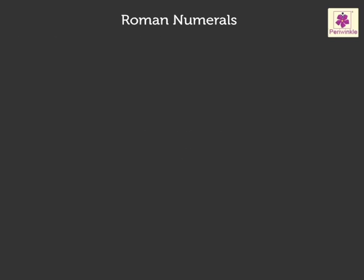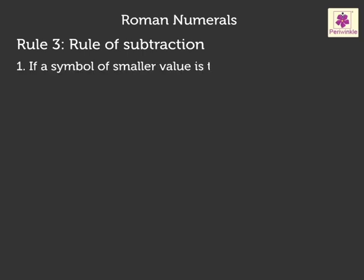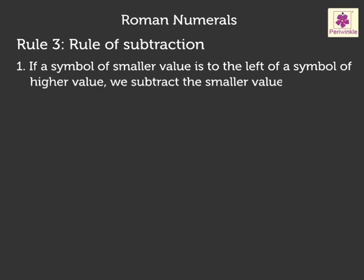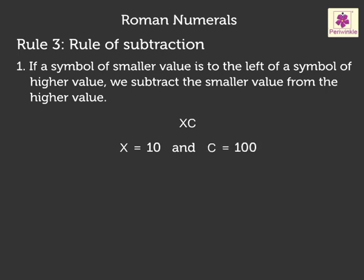Finally, we have the third rule — Rule 3: Rule of Subtraction. If a symbol of smaller value is to the left of a symbol of higher value, we subtract the smaller value from the higher value. For example, let us take the number XC. X has a value of 10 and C has a value of 100, so XC equals 100 minus 10, which is 90.